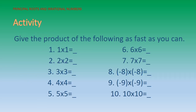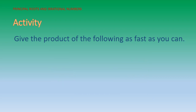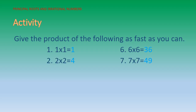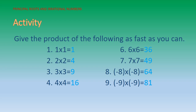You have this activity — you are going to give the product of the following as fast as you can, from one to ten. Let's see the answers: number one is 1, number six is 36, number two is 4, number seven is 49, number three is 9, number eight is 64, number four is 16, number nine is 81, number five is 25, and number ten is 100. Now let us look at another way of writing the product of this activity.